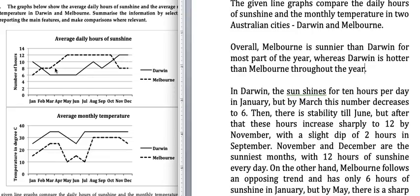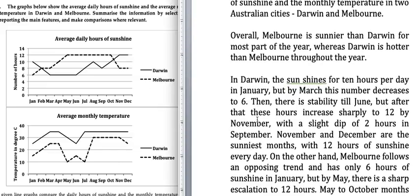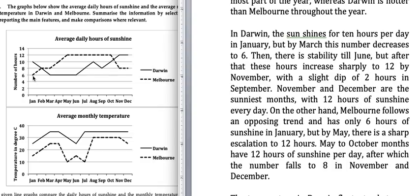On the other hand, Melbourne follows an opposing trend — when the Darwin line is going down, Melbourne's is going up, and vice versa. Melbourne has only 6 hours of sunshine in January, but by May there is a sharp escalation to 12 hours. May to October months have 12 hours of sunshine per day, after which the number falls to 8 in November and December.